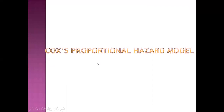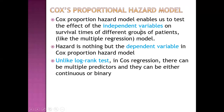Cox Proportional Hazard Model enables us to test the effect of independent variables on survival times of different groups of patients. It is like a multiple regression model where hazard is the dependent variable. Unlike the log-rank test, Cox regression can have multiple predictors, and they can be either continuous or binary variables.